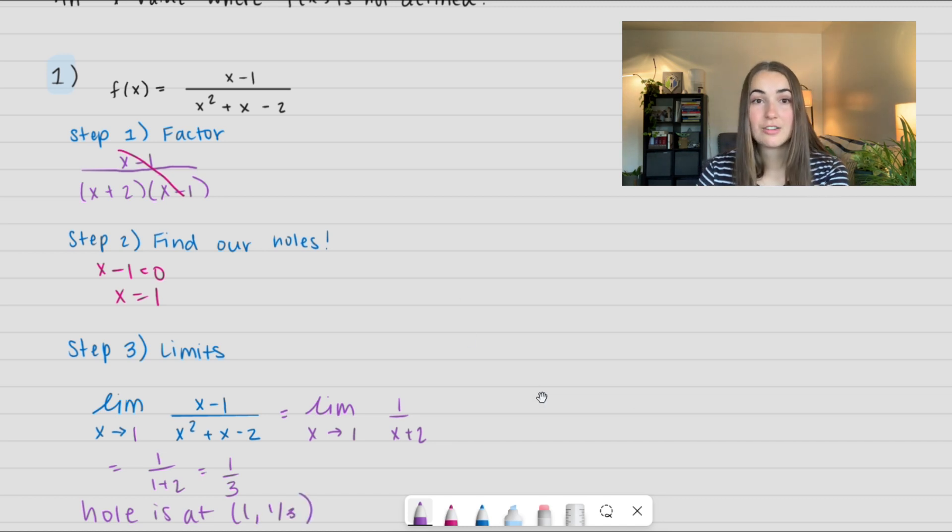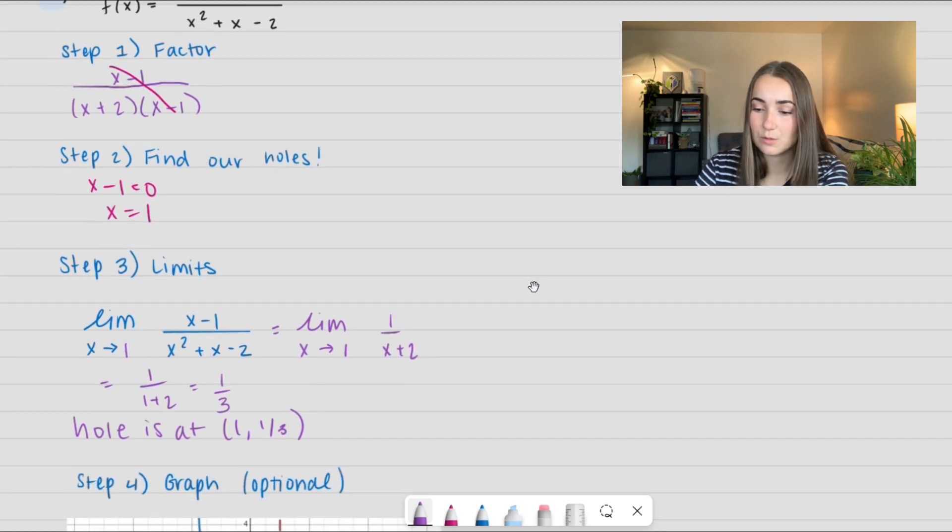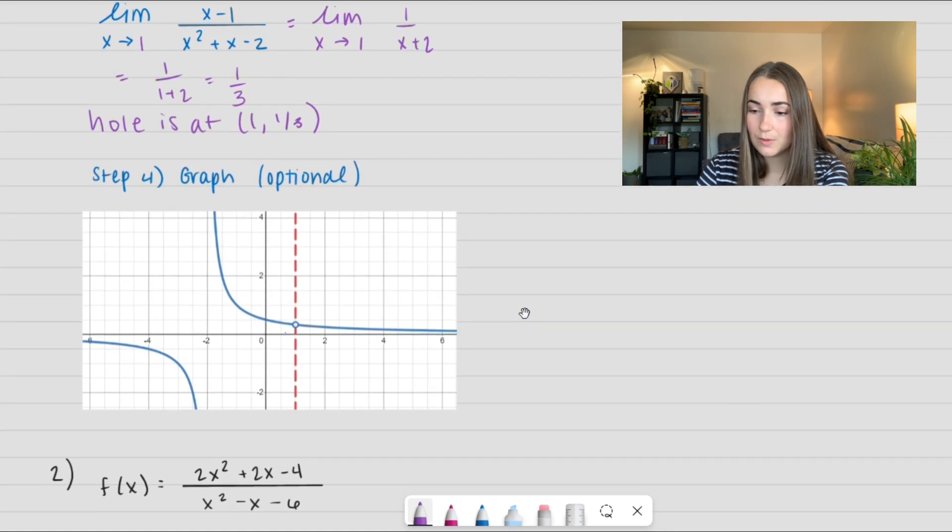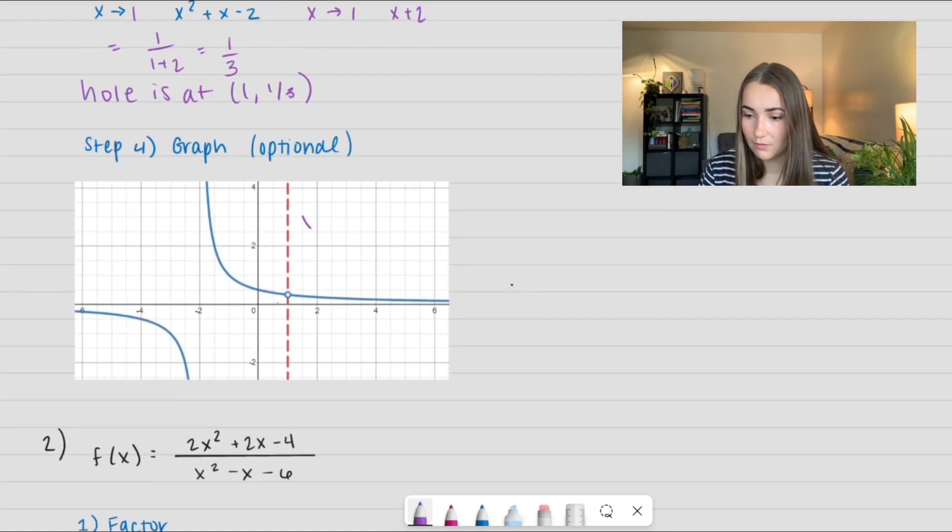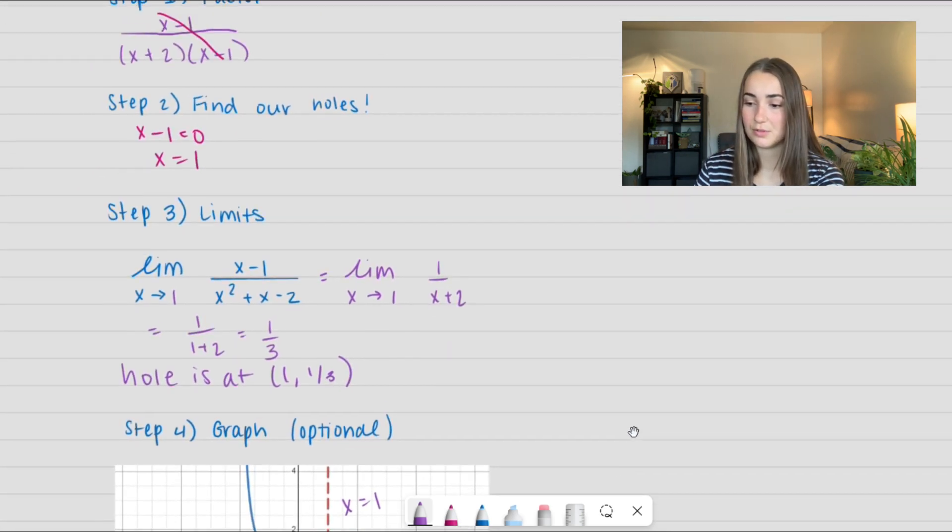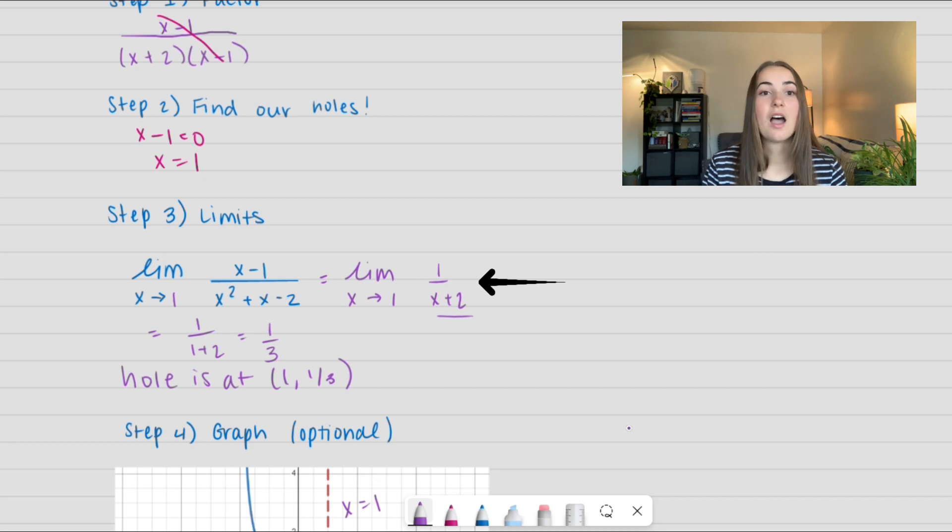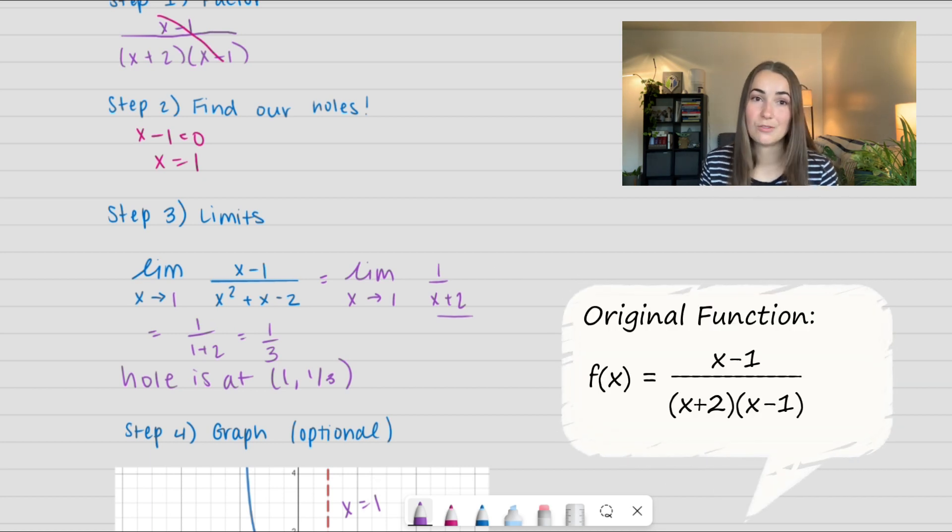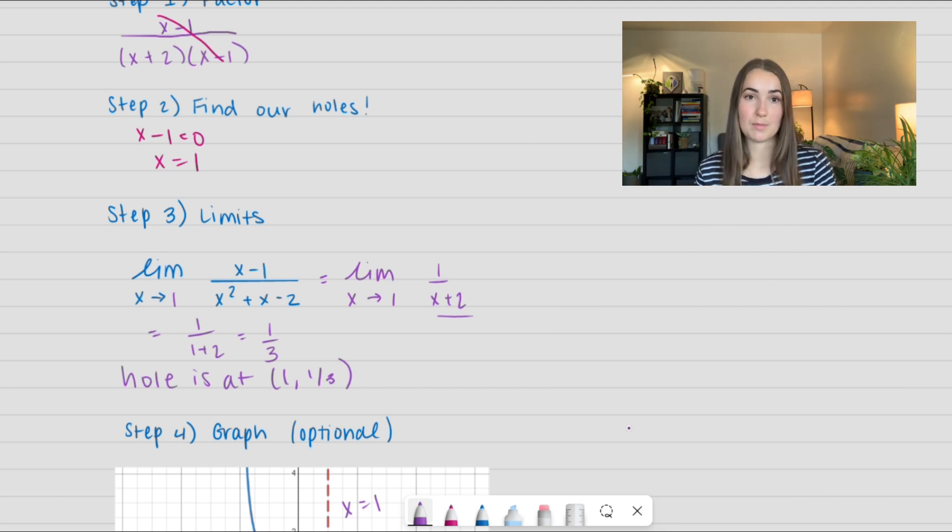If we were to look at the graph, the graphing piece is optional. I don't know where it's required and where it's not, but this is so we can visually see it. Here we can see our x value of 1. We have an illegal value and we have a hole right here. The reason that we have a hole is because even though this simplifies to 1/(x+2), it's not our original function. Our original function has an illegal value at x = 1 because we can't divide by 0. So we have to keep that in mind.